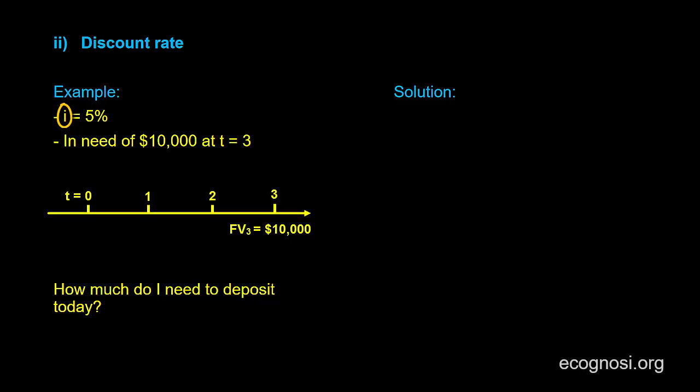Continuing with our example, assume that I will need $10,000 in 3 years time, for whatever reason. Say that I will go to college in 3 years, and $10,000 is the college tuition fee I will need to pay, and this $10,000 can be interpreted as the future value at time 3.